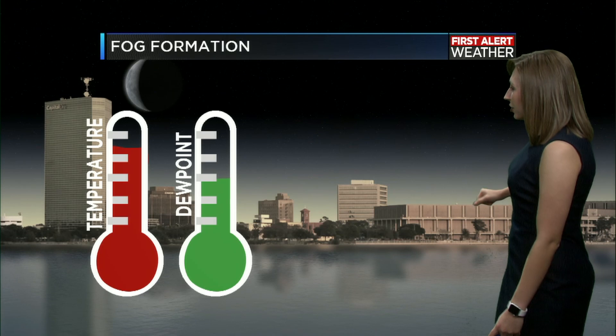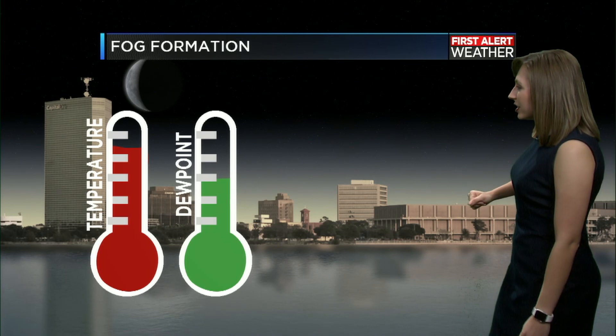Here's how fog is going to form. We're going to start out with a clear sky over the lake area, the downtown area, the Civic Center. You can see all of this quite clearly. We've got our thermometer and a dew point reading as well. Temperature is shown in red and dew point in green. Temperature measures how much heat is in the air, and the dew point measures how much moisture is in the air.